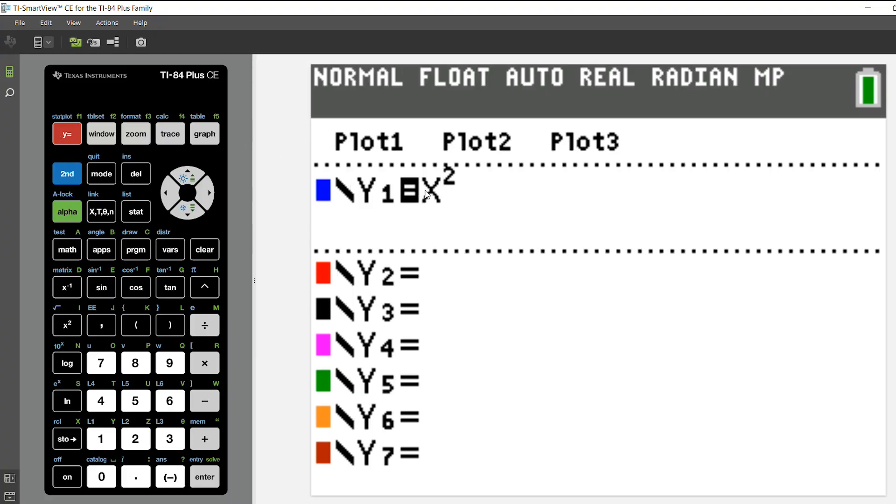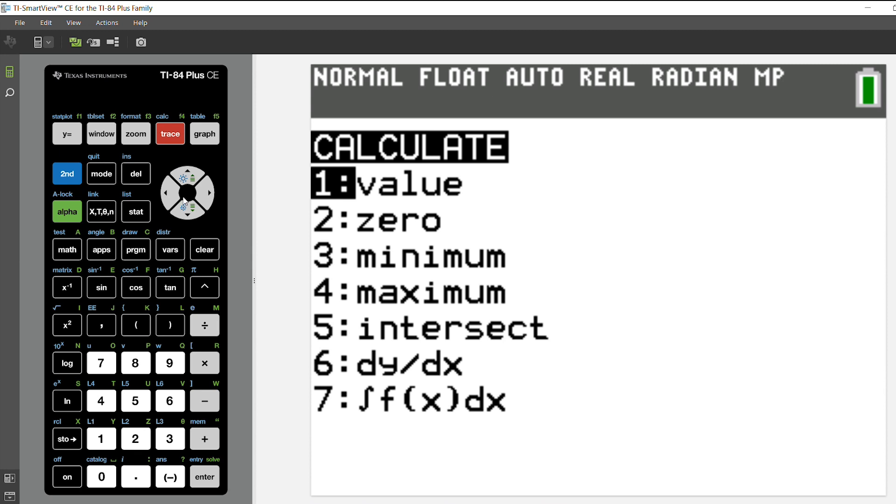What I've already done is inserted x squared into y equals. Next what you'll do is second trace. You can arrow down to 6 or you can just enter 6 on your calculator and hit enter.